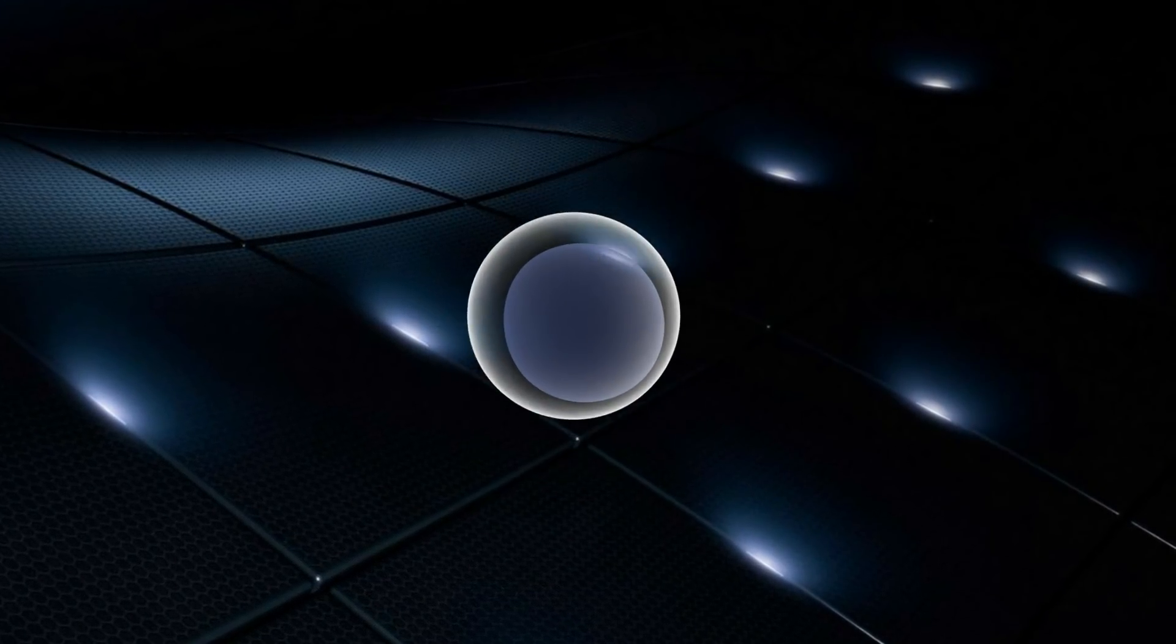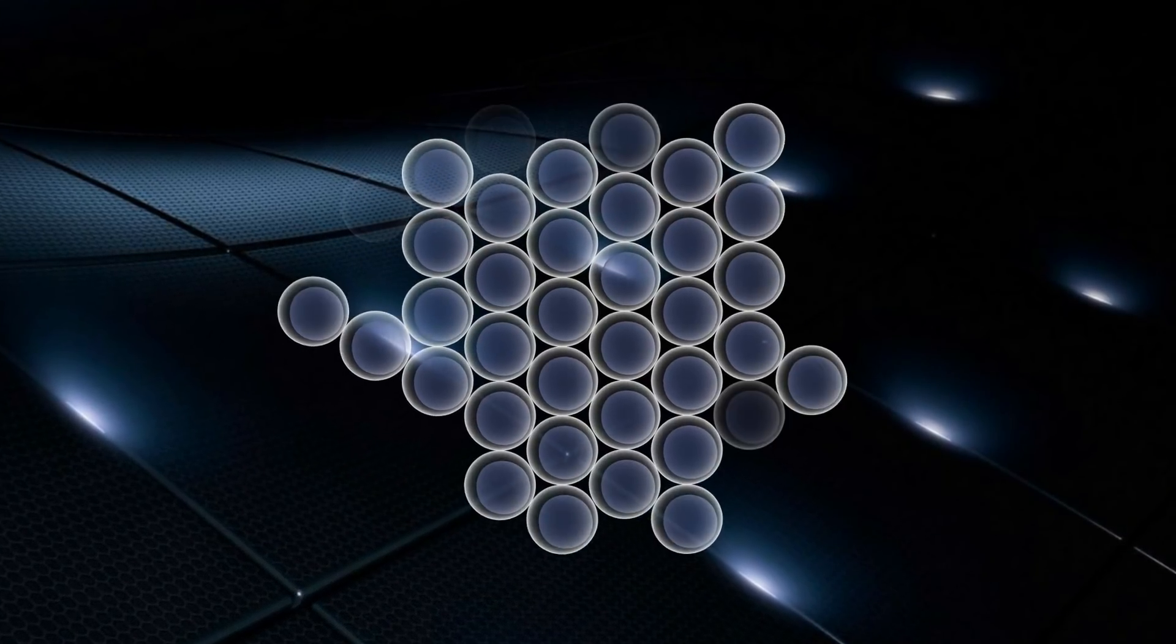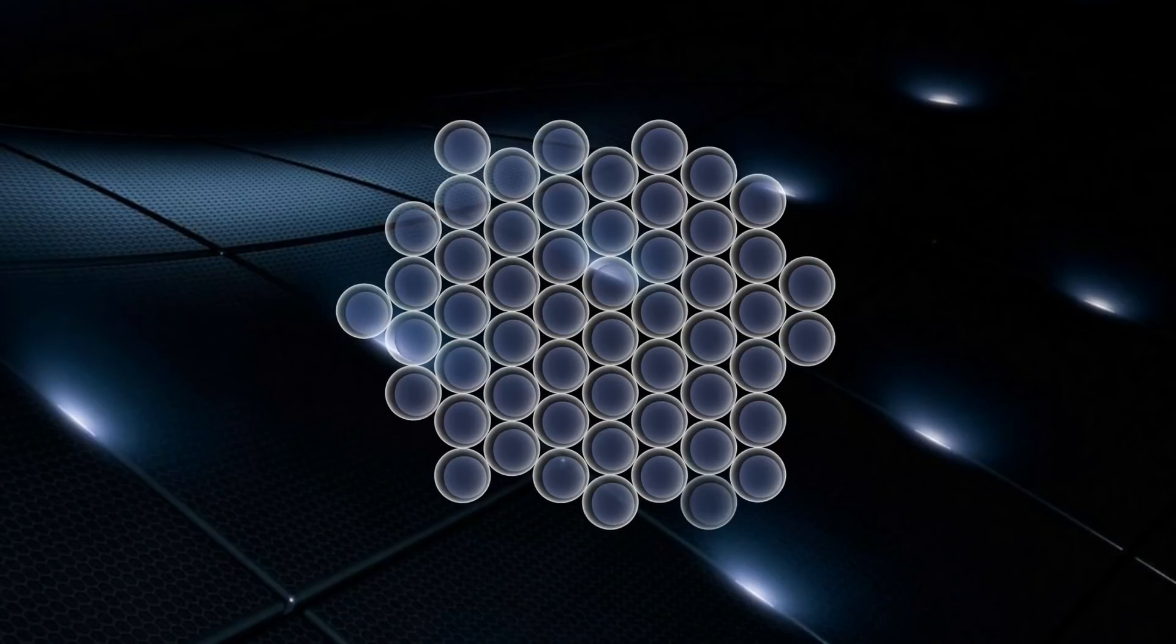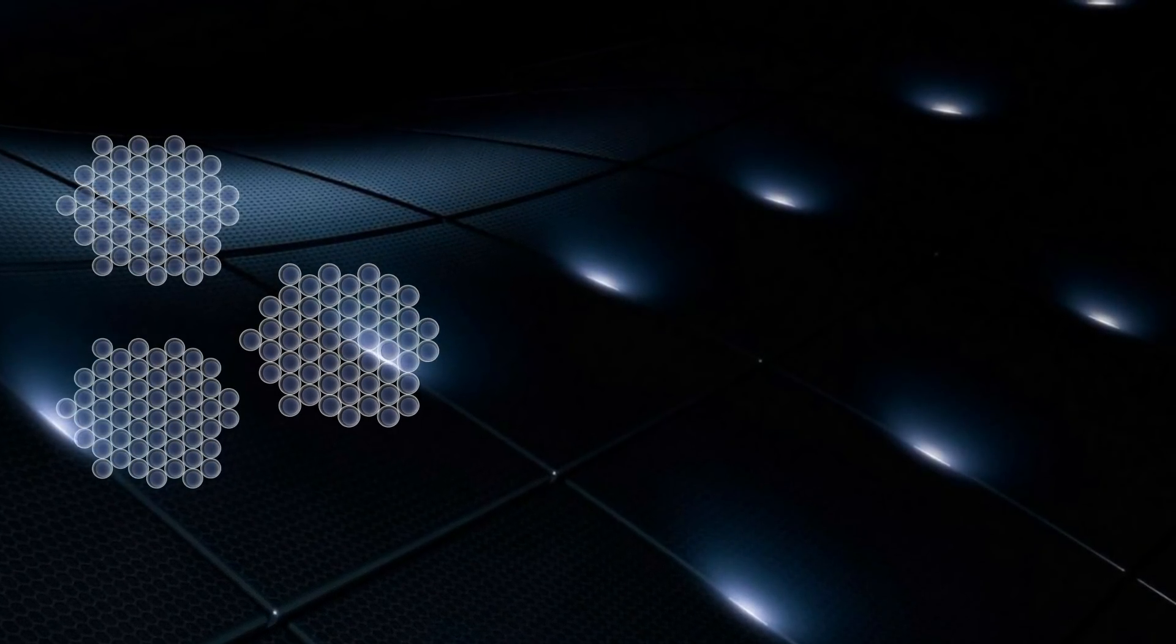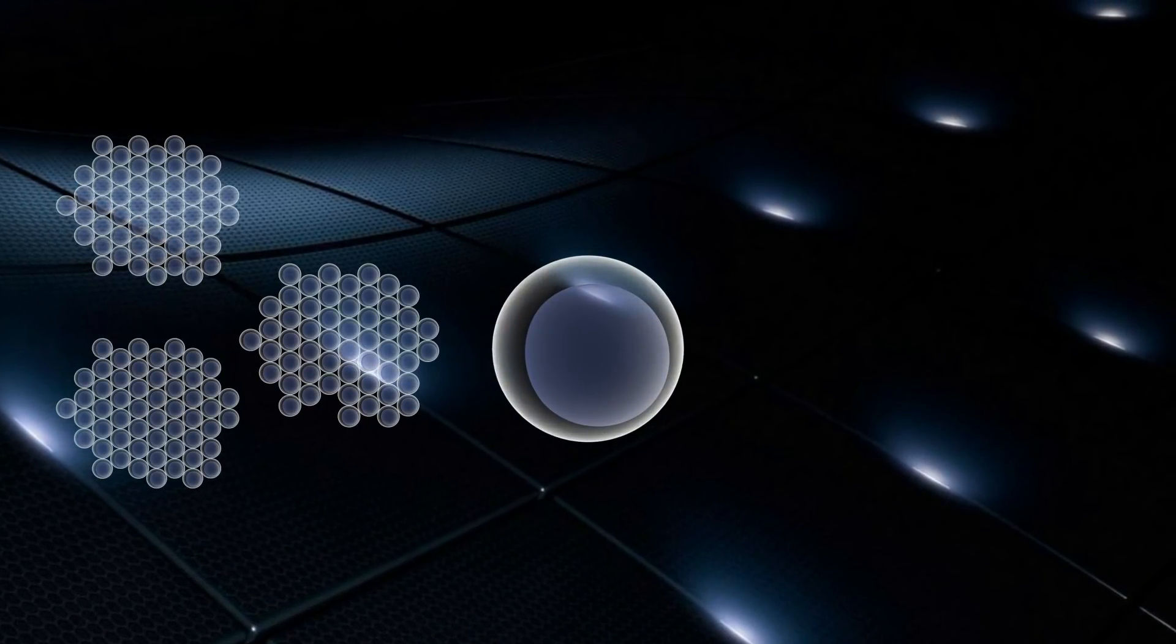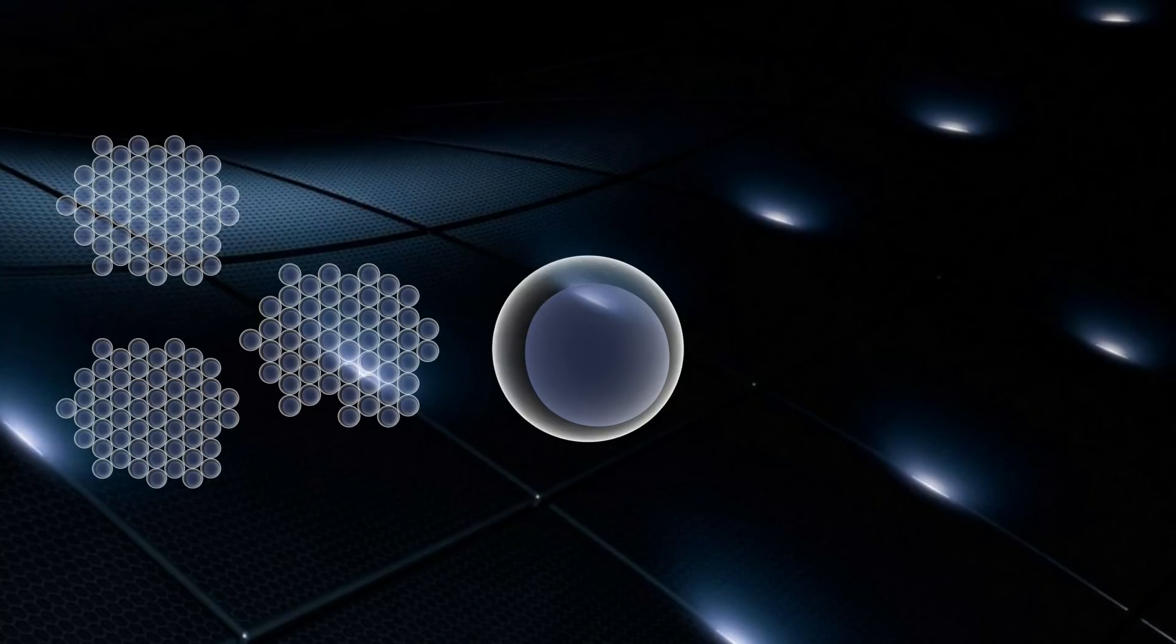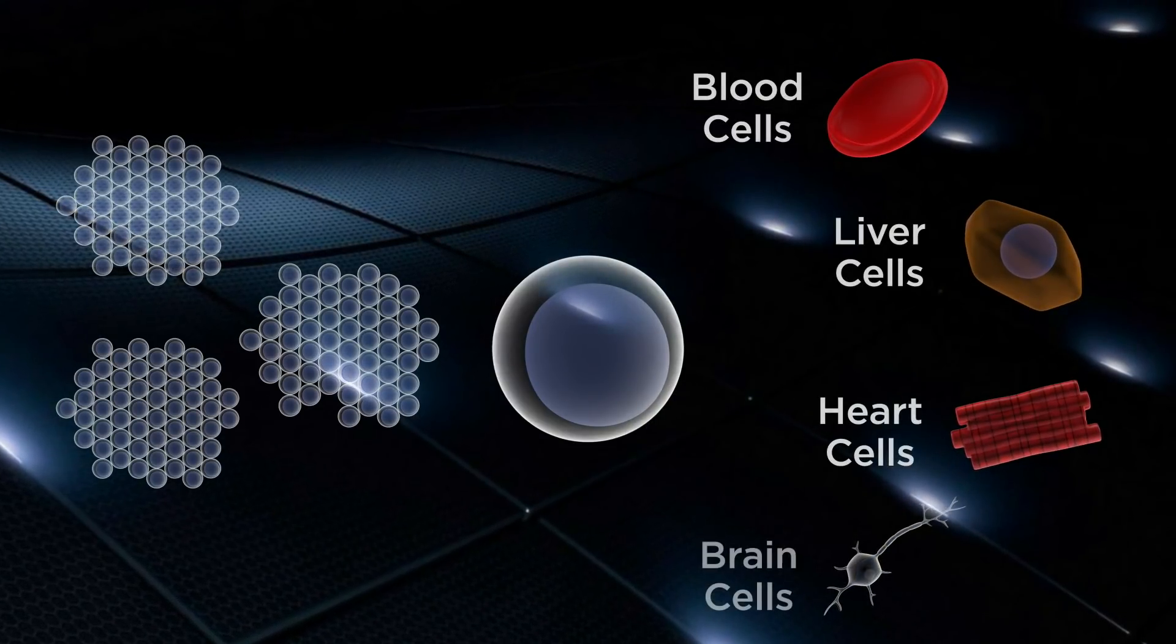Once these cell lines are established, you can grow them indefinitely in the laboratory or differentiate them into any cell type of the human body. The differentiation process basically takes a primitive stem cell and turns it into specialized cells, such as blood cells, liver cells, heart cells, and brain cells.